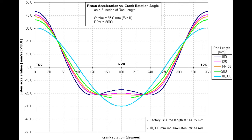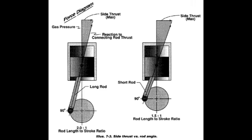As a side benefit, a longer rod stroke ratio will also reduce the angulation of the piston and connecting rod during operation. As a result, frictional losses will be reduced and the thrust loading on the piston to bore will also be reduced, resulting in less wear on the cylinder wall overall.